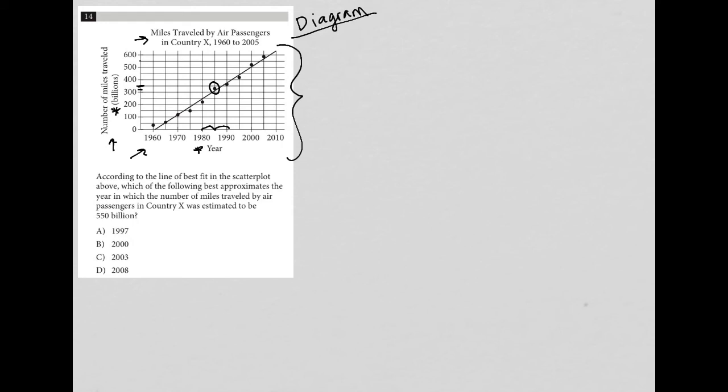550 billion would be here. I go across to my line of best fit, which hits right there. I go down from that point, which gets me—it's not perfect—to about there. If this is 2005 here and this is 2000 here, this looks like it should be about 2003.